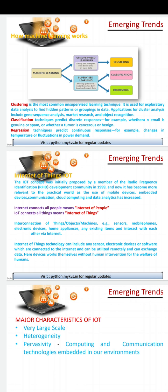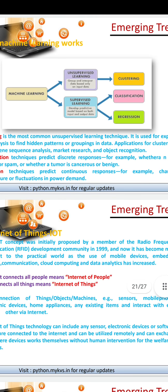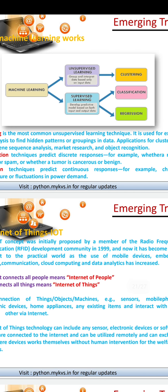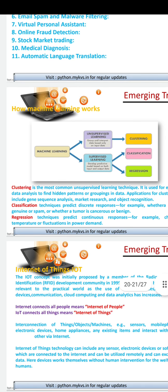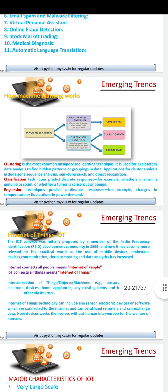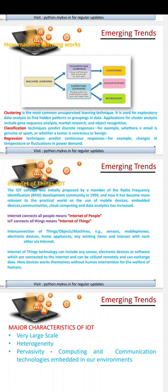How does machine learning work? There are two ways of machine learning: supervised learning and unsupervised learning. Unsupervised learning groups and interprets data based only on input data. Supervised learning develops a predictive model based on both input and output data. Topics like clustering, classification, and regression will be explained in more detail in an upcoming online class.